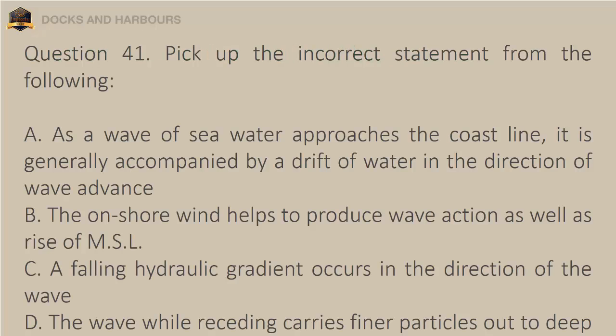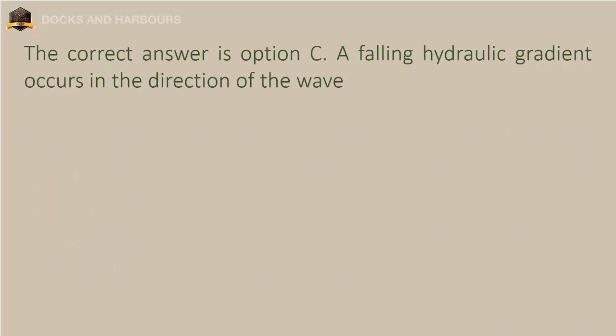Question 41. Pick up the incorrect statement from the following: a. As a wave of sea water approaches the coastline, it is generally accompanied by a drift of water in the direction of wave advance. b. The onshore wind helps to produce wave action as well as rise of MSL. c. A falling hydraulic gradient occurs in the direction of the wave. d. The wave while receding carries finer particles out to deep water. The correct answer is option C: A falling hydraulic gradient occurs in the direction of the wave.